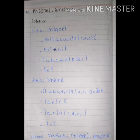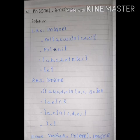Now we find (P intersection Q) intersection R. P intersection Q gave us A and E. R set is C, D, E, I. The common element between {A, E} and {C, D, E, I} is E. So the right-hand side answer is also E. The left-hand side answer was E, so P intersection (Q intersection R) equals (P intersection Q) intersection R. Hence verified.